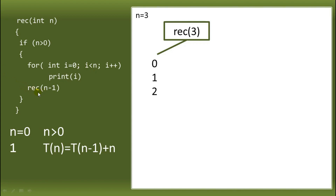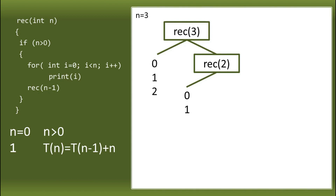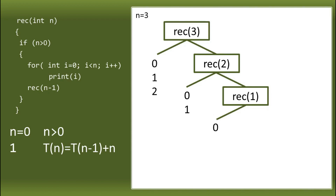After printing, it calls the function again: `rec(N-1)`, so N is 3, making it `rec(2)`. Back at the condition: 2 greater than 0 is true, it prints 0 and 1, then calls the function again with N minus 1. N is now 2, so `rec(1)` is passed. 1 greater than 0 is true, it prints 0 only, then calls `rec(0)`. Back at the condition: 0 greater than 0 is false — it does nothing and the recursion stops.